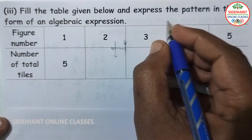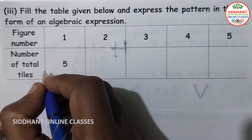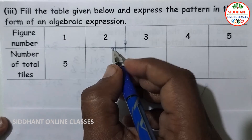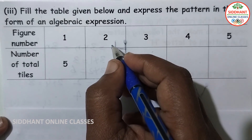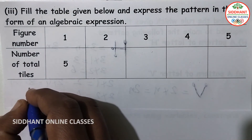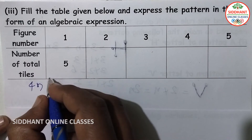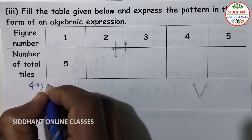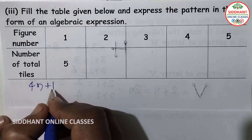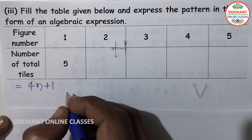Third part: fill the table for total tiles and express the pattern in algebraic form. In figure 1, the total tiles are 5. Since the center tile is white, the total tiles expression is 4n plus 1. For figure 1, 4 into 1 plus 1 equals 5.